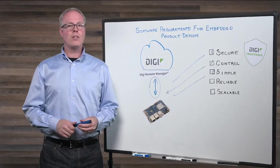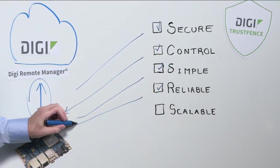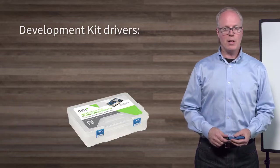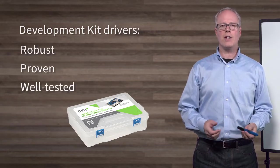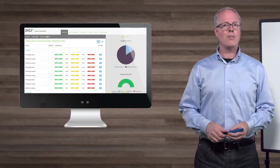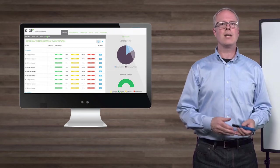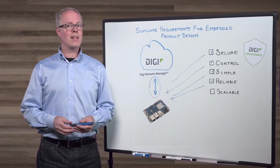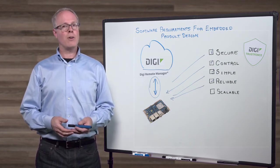Fourth, of course, you need all of this to be reliable. If your device will be connecting wirelessly, you want to be sure it will always stay connected. For example, our development kits include robust, proven, and well-tested drivers for all interfaces. And our cloud connector provides well-defined and tested interfaces for handling configuration, software updates, and other messaging needs. All of this is rigorously tested together so you can focus on your embedded application rather than worrying about connectivity.